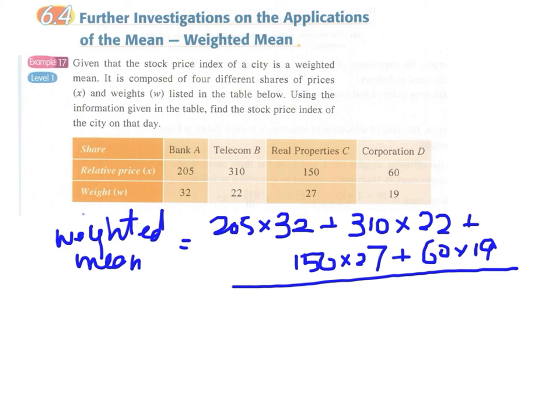The denominator will be the sum of all the weights. Look that the denominator is not four; it is the sum of all the weights.